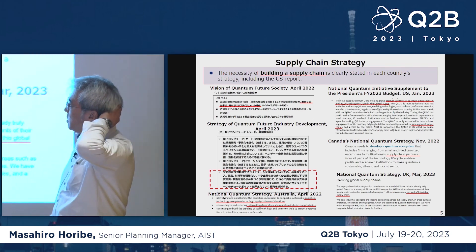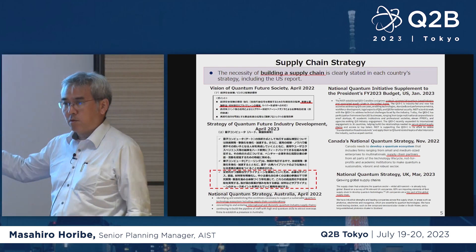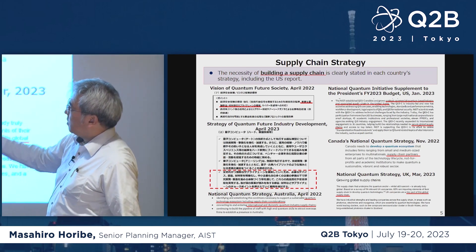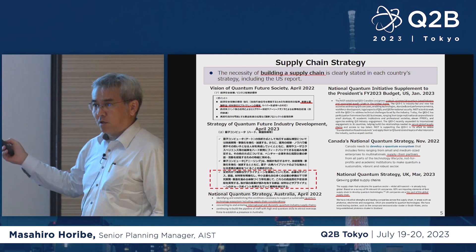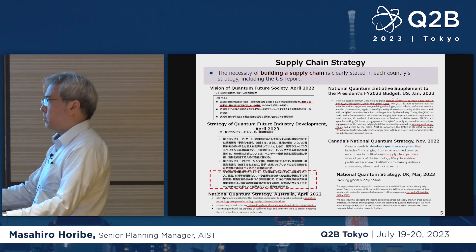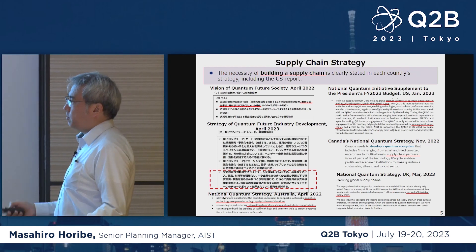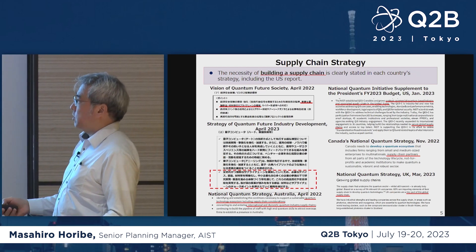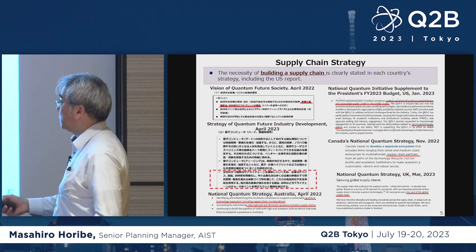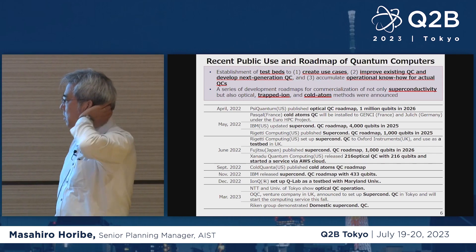I'd like to talk about some of the supply chain strategies. Japanese documents discussing supply chain are also found in other countries' documents — every one of them refers to supply chain. That supply chain is not only limited to Japan but should be established in a global context. While establishing communications between countries, we are supposed to build supply chains for quantum computing.